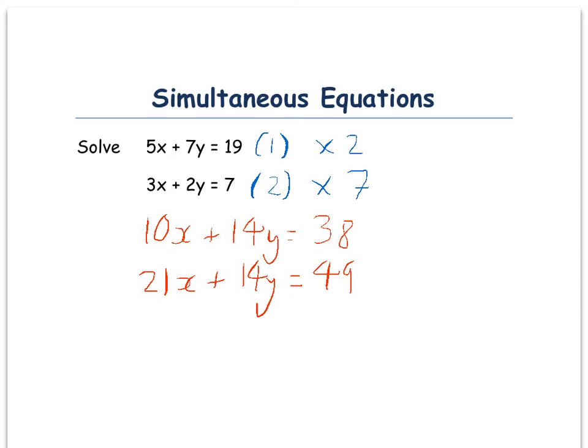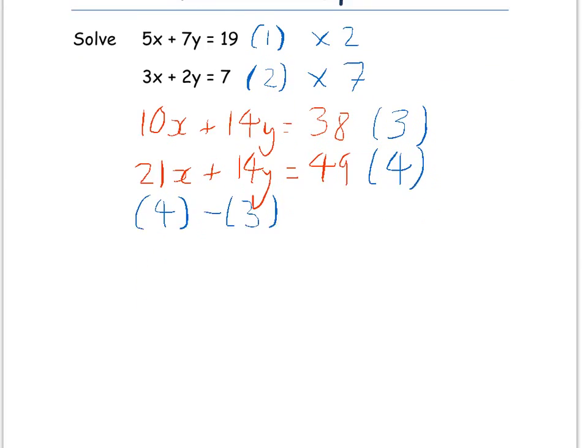So, so that we don't go into negative numbers on this, I'm going to do the bottom one, which I'm going to call number four, minus number three. If I do it the other way around, I'm going to end up in negative numbers. So, we're going to do four take away three.